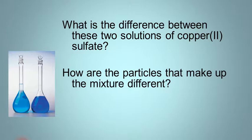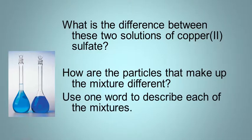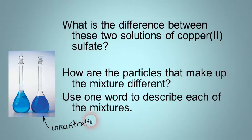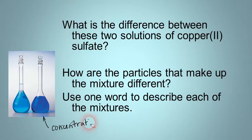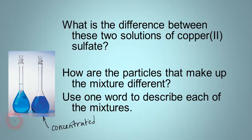Now how are the particles that make up the mixtures different? Well, both of them have water and they both have copper sulfate, but the container on the right has particles that are closer to each other — they're more concentrated or more compacted. So if you were to use one word, you could say 'concentrated' for the flask on the right, and 'dilute' for the one on the left, because it doesn't have as much copper sulfate.